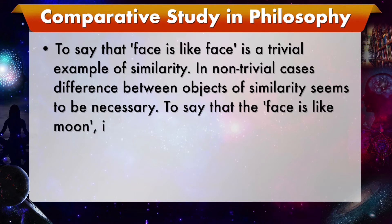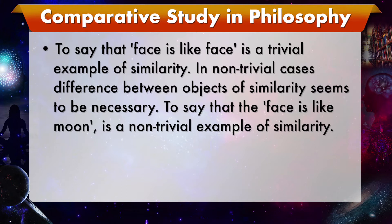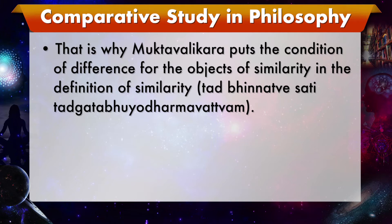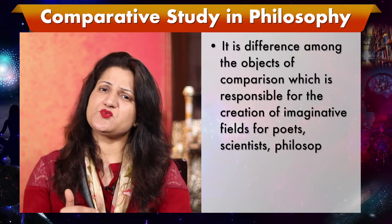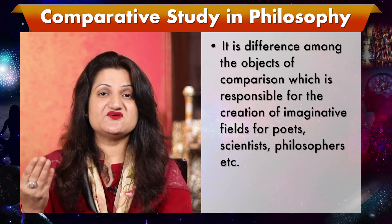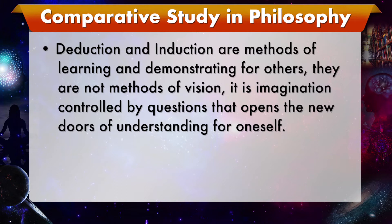It seems that we cannot uproot our roots from symmetry. Self, reason, freedom, determinism — these are simply modes for the expression of symmetry. It is love for symmetry which gives impetus to comparative philosophy. The discovery of similarity between philosophies sharing the same background is less valuable than the discovery of similarity between philosophies having different backgrounds, because in the latter case similarity is not trivial. To say that face is like face is a trivial example of similarity. In non-trivial cases, difference between objects of similarity seems to be necessary. To say that a face is like the moon is a non-trivial example — that is why Muktavalikar puts the condition of difference for the objects of similarity in the definition of similarity.